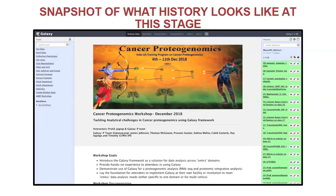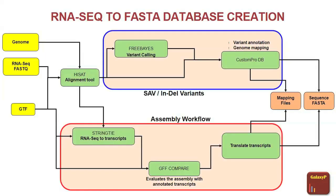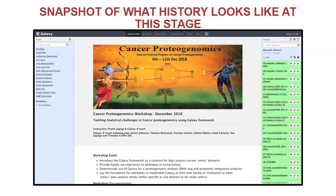Let us imagine that we have run the first workflow. We started with the FASTQ files, the FASTA file, as well as the GTF file, ran through all of this and got a protein sequence file. This is how your history looks like once you go through the documentation and access the Galaxy instance. After the first workflow, you have this history, and one of these would be a protein FASTA file that you can use for your analysis.